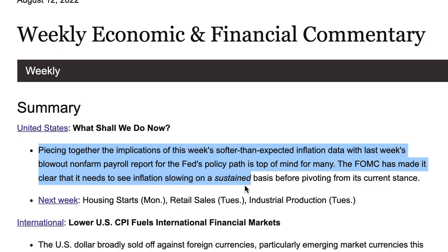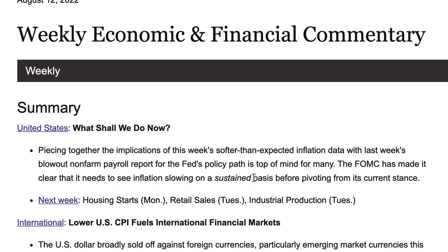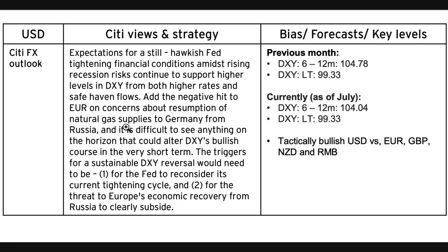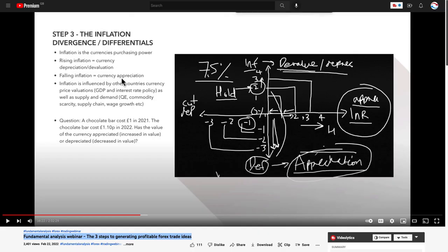It looks like the Fed is probably still going to continue to hike rates — hence the reason why I personally am still a buyer of the dollar. Until inflation proves that it is trending back towards a 2% target, that would be a signal to potentially look to start selling the dollar. Citi Bank are saying that the triggers for a sustainable DXY dollar index reversal would need to be for the Fed to reconsider its current tightening cycle — and they would only consider that if inflation starts to come down and looks like it's trending back towards their 2% target.